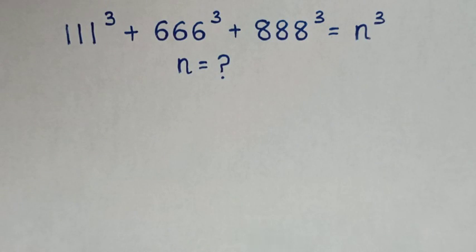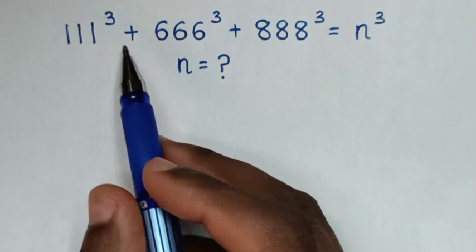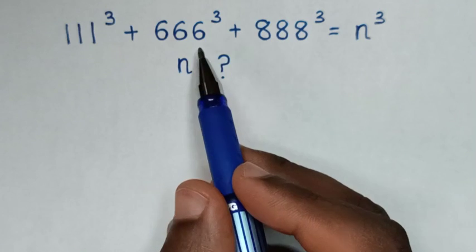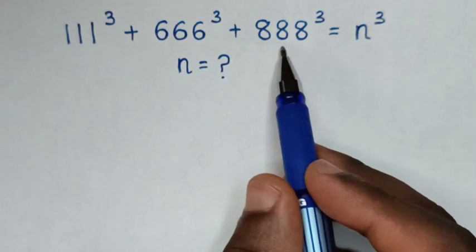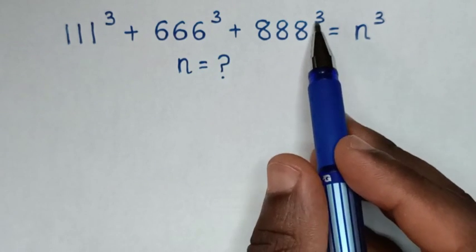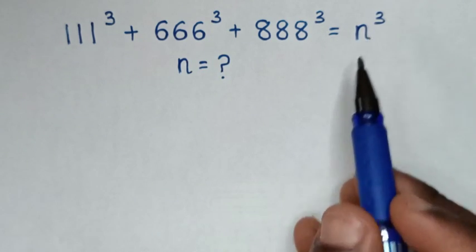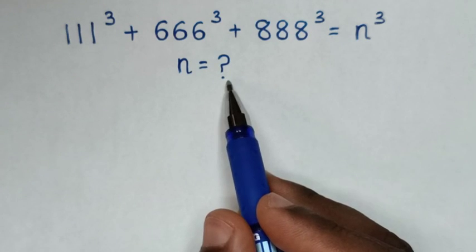Hello. How to solve 111 power of 3 plus 666 power of 3 plus 888 power of 3 is equal to n power of 3, to find the value of n from this equation.